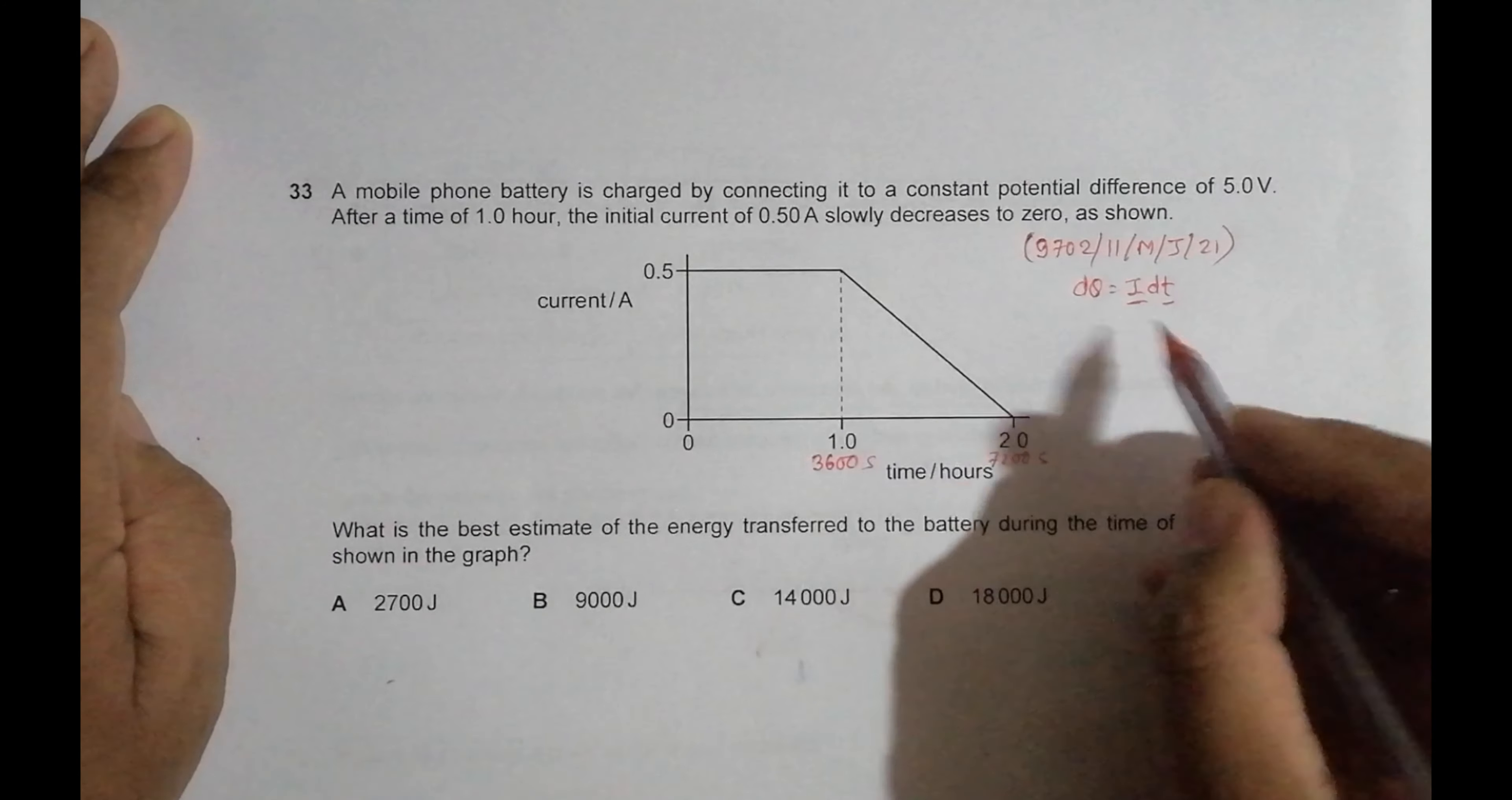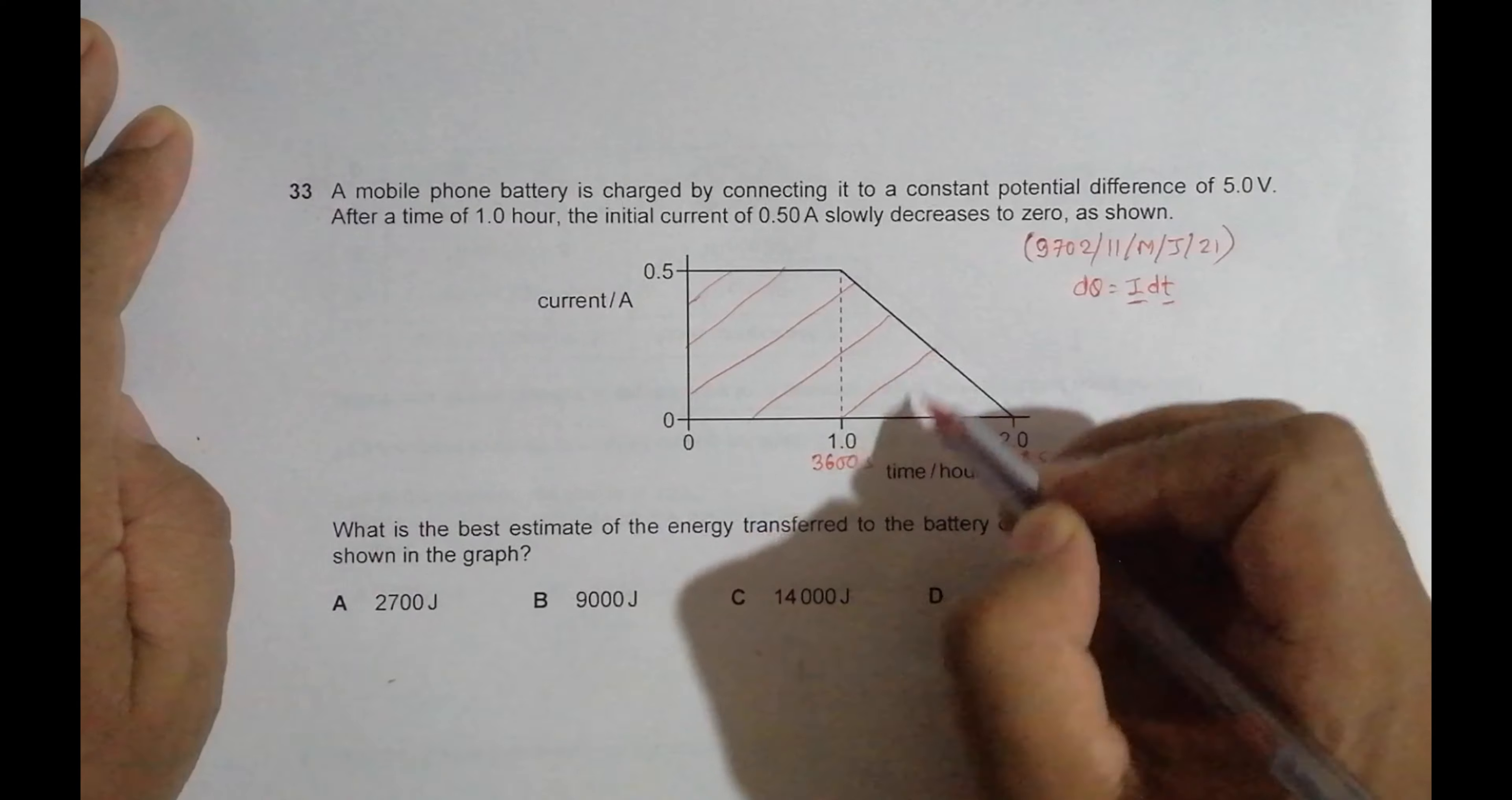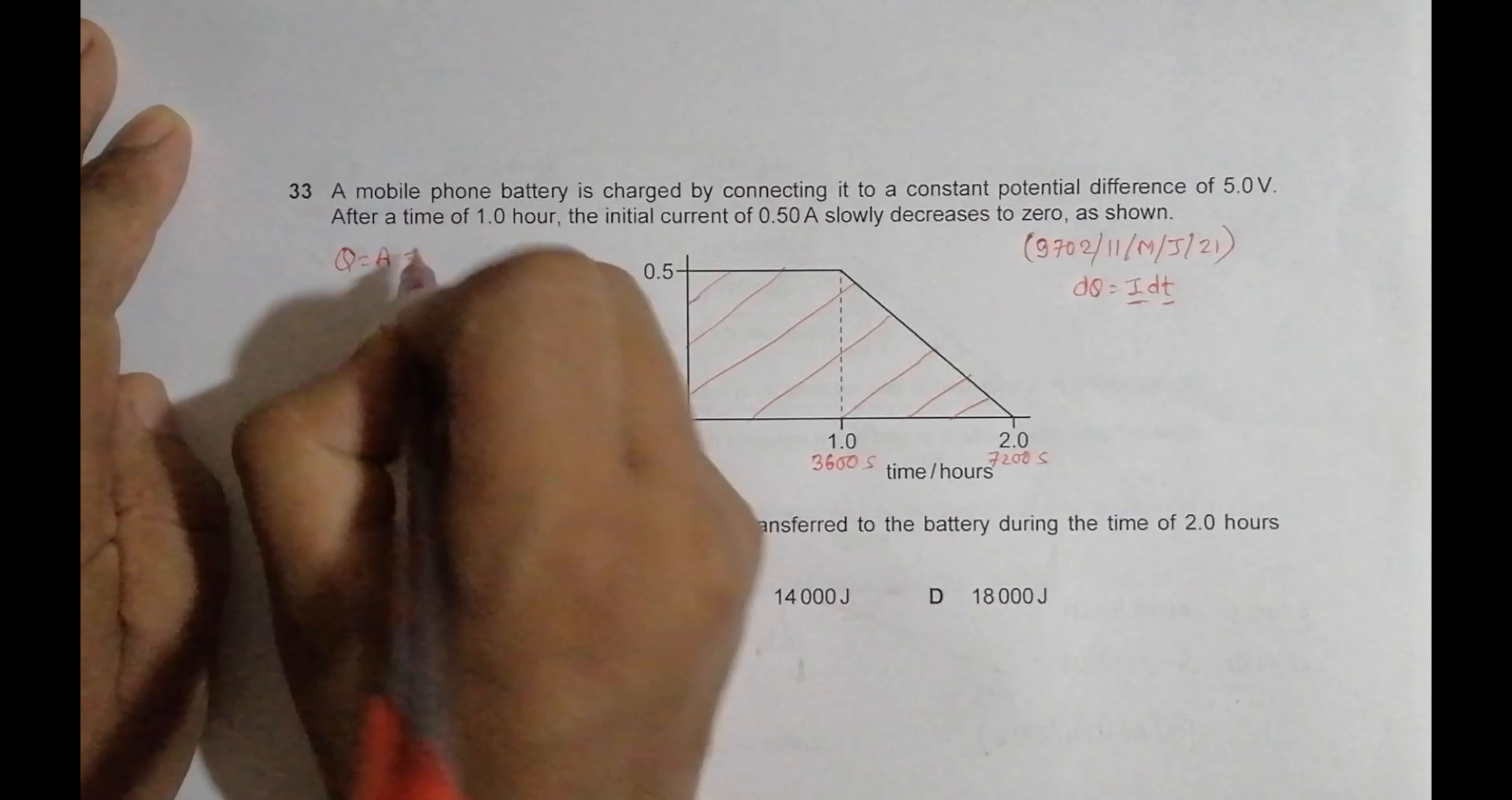Charge passed or charge deposited. So I have to find the area covered by this whole graph. The amount of charge will be equal to the area of the graph.